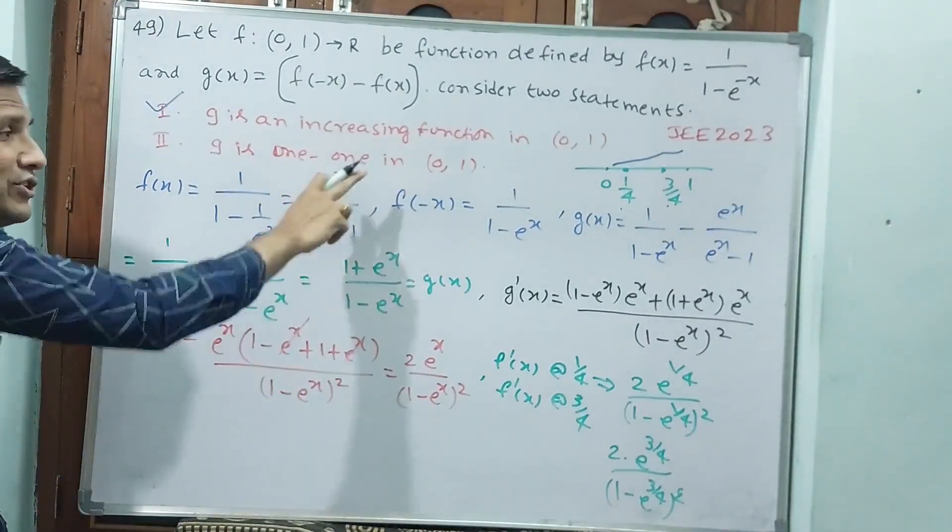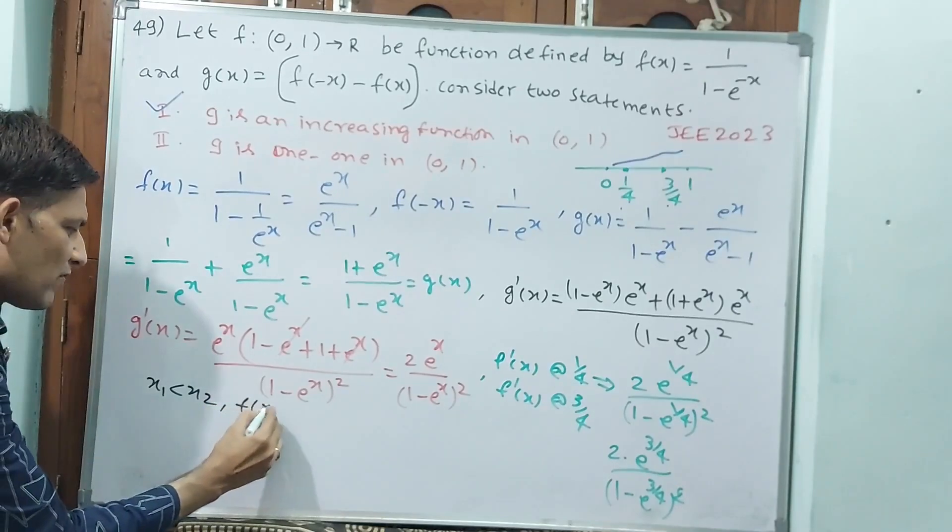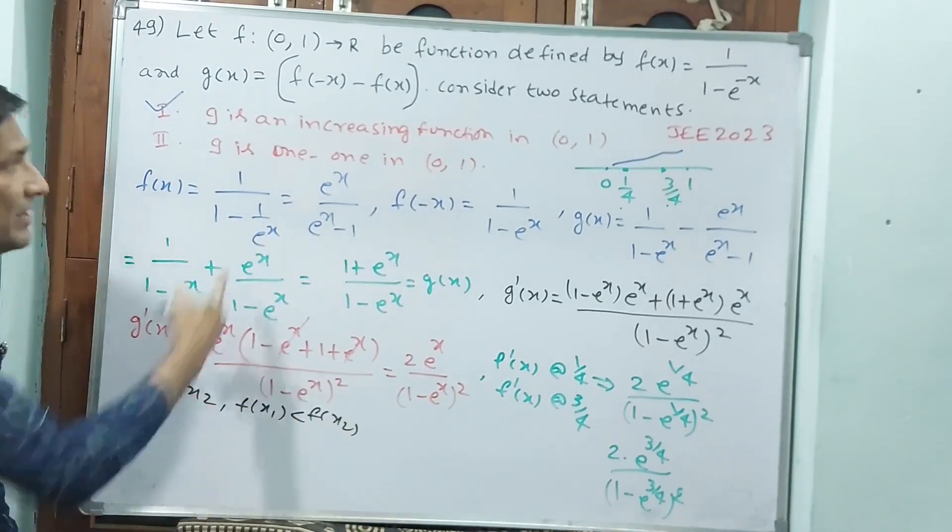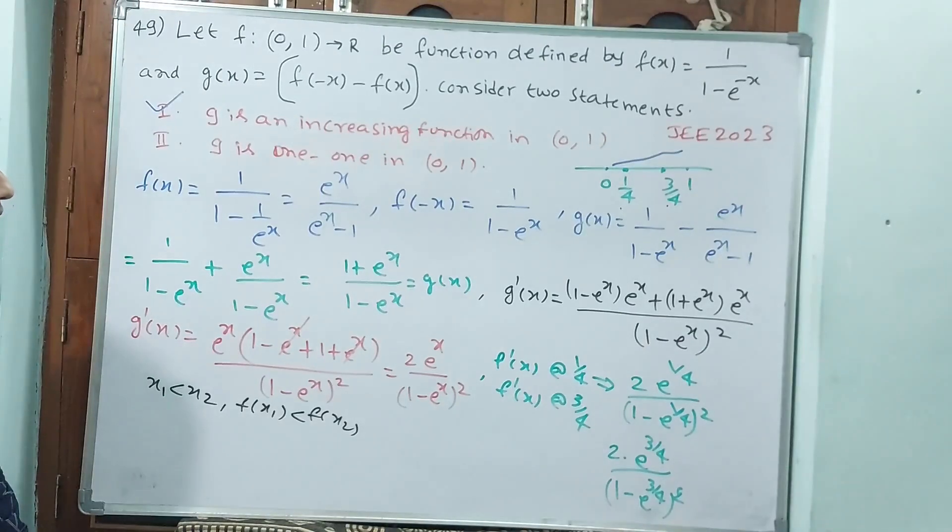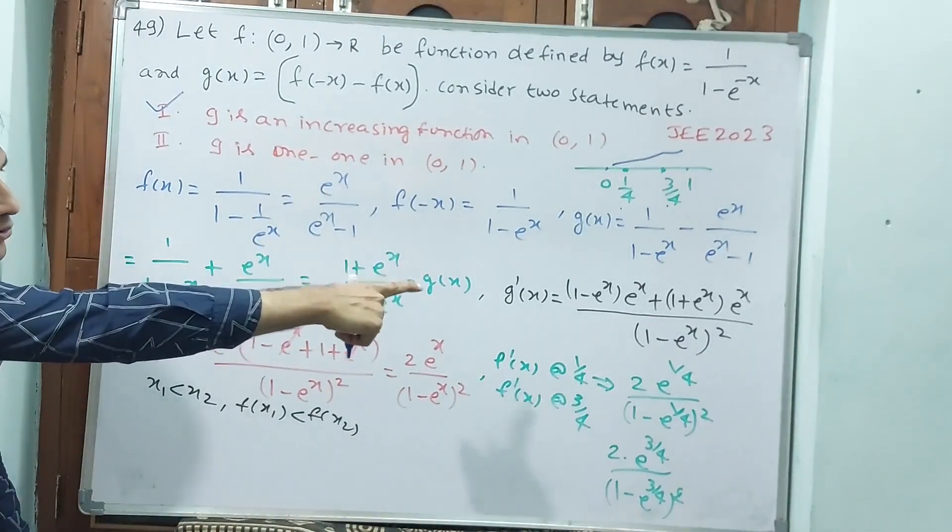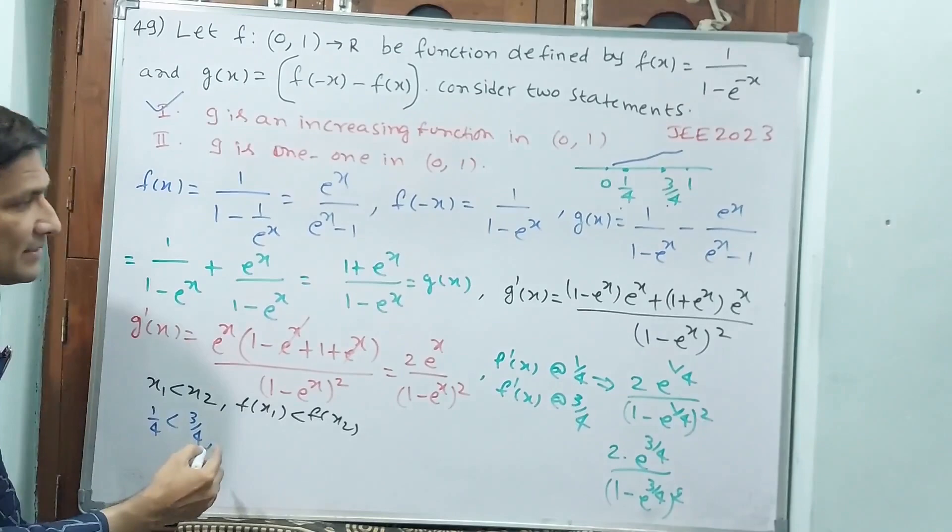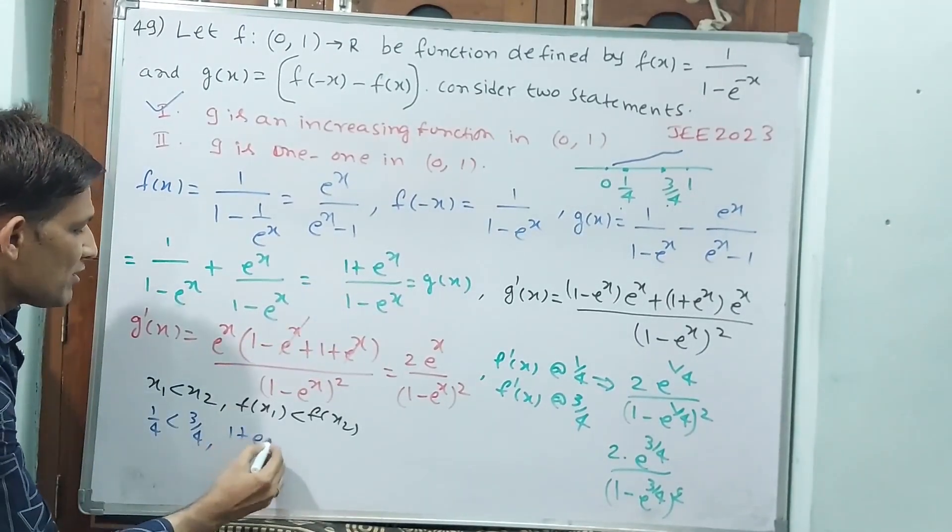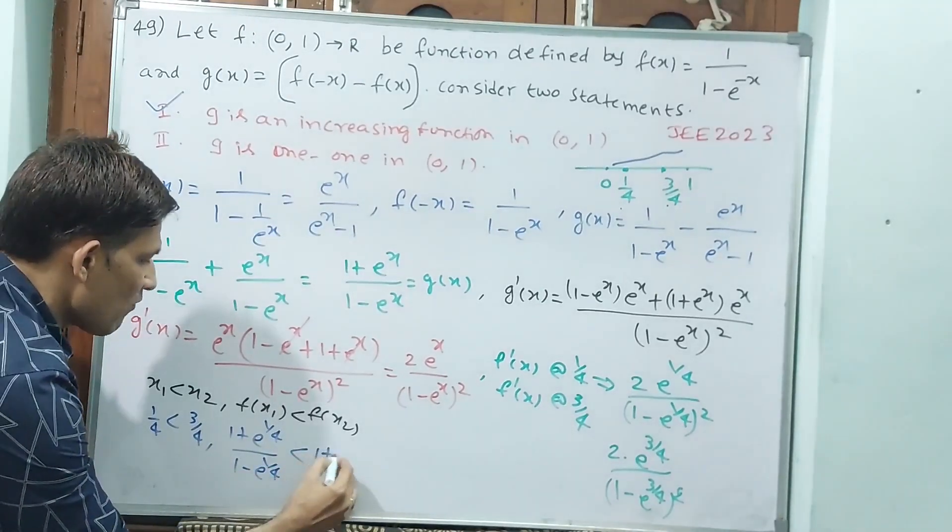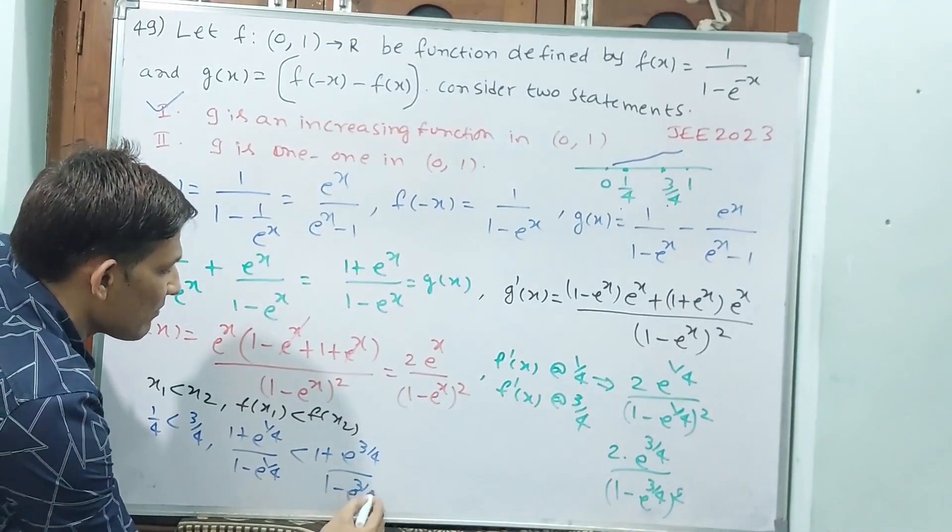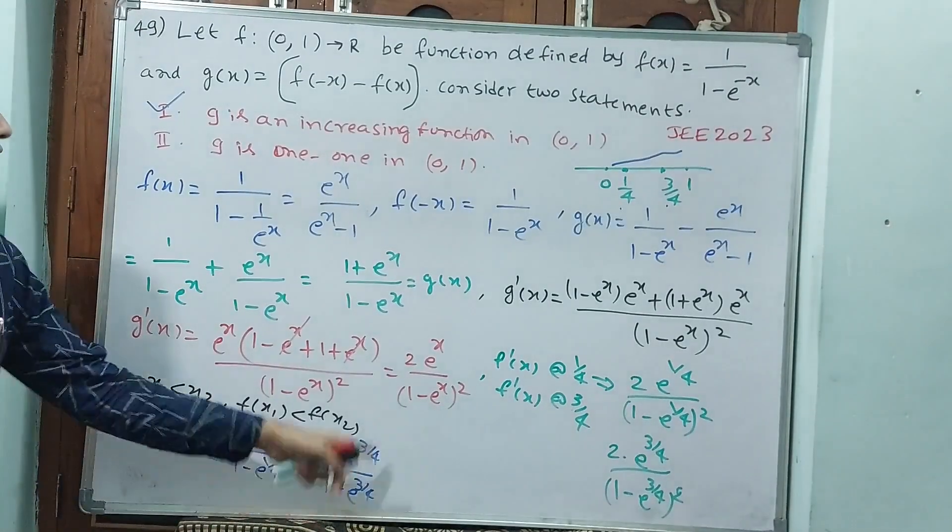Second thing, g is 1-1. How you are going to know? We know one formula: if x1 < x2 and f(x1) < f(x2), then 1-1. As per this strategy, I don't take 0, I take like that only, 1/4. See, 1/4 < 3/4. Now I am applying this 1/4. (1 + e^(1/4))/(1 - e^(1/4)) < (1 + e^(3/4))/(1 - e^(3/4)). This is going to be definitely true. Why? Because this is always greater than this.